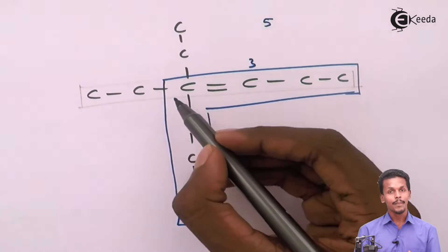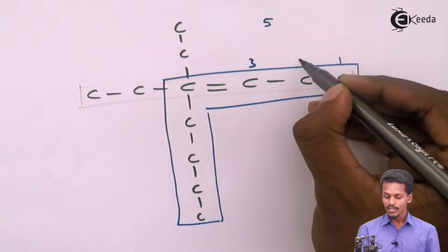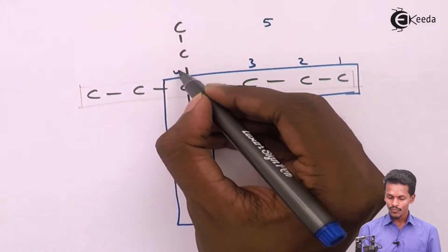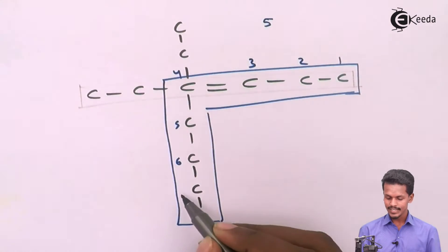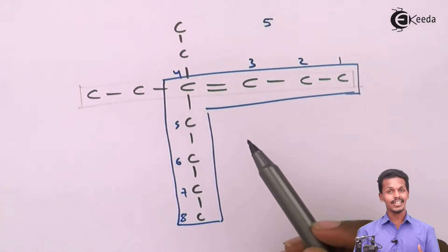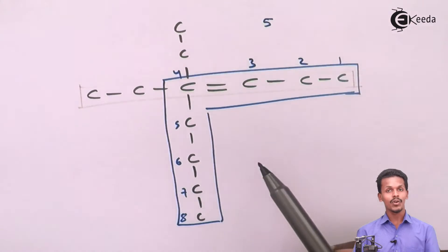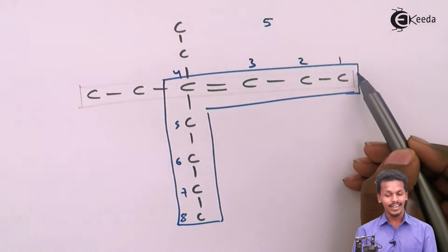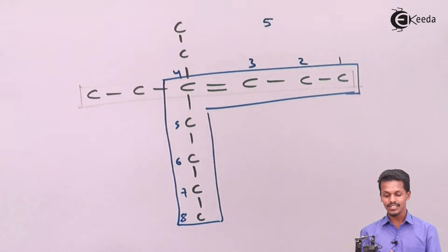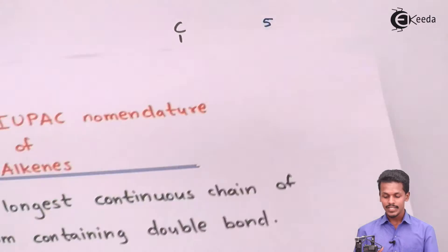So the preferred sequence is: carbon number one, two, three, four, five, six, seven, and eight, numbered from the end where the carbon-carbon double bond is nearest. The carbon-carbon double bond is very near to this end and not the other end — that is the reason the numbering rule is also a very important rule in IUPAC nomenclature of alkene. So these are the two rules we have studied.